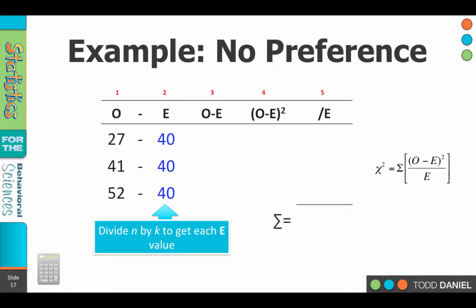Our next step is to calculate O minus E, observed minus expected. So we take each observed value, subtract from it the expected value. If it's negative, include the negative sign.